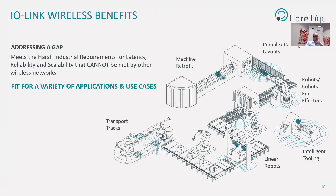To summarize, IO-Link Wireless addresses unmet needs that cannot be served by existing wireless systems. It provides a broad range of applications and use cases that drive operational excellence, adaptive manufacturing, and cost efficiency. IO-Link Wireless is transforming wireless connectivity for factory automation by creating a more connected industrial world — not bound by cables — in the most reliable, scalable, and cost-effective manner. Thank you very much.